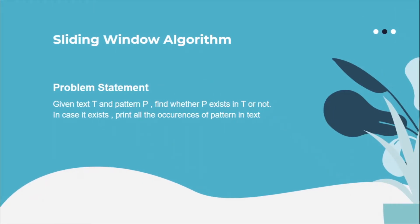First, what is the sliding window algorithm? To answer this question, let's learn the problem statement of the problem which is solved using the sliding window algorithm. The problem is: you are given a text T and a pattern P, and you have to find whether pattern P exists in text T or not. Text T can be anything — a string, a simple line, or a paragraph. The pattern is what you want to search in the text. If the pattern exists in the text, you have to print all of the occurrences of the pattern in the text.